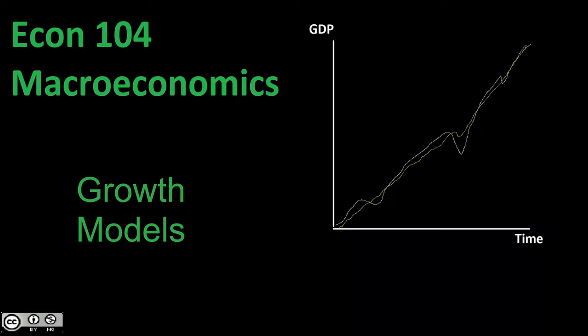Welcome back to Econ 104 Macroeconomics. In this video, we're going to be continuing on talking about economic growth. Specifically, we're going to be taking a look at our growth models — how exactly do we explain why economic growth happens, and what are the prerequisites, if any, for economic growth. We'll be taking a look at a few different models, explain what exactly models mean, why we create them, what they're used for, and we'll talk about these prerequisites.